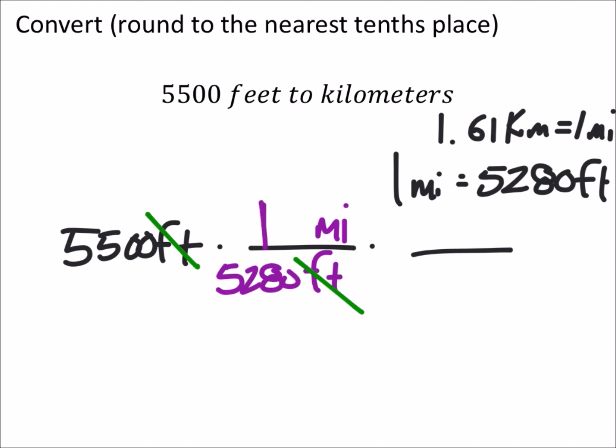But then we want to convert this into kilometers. And that's what we really want out of this. And we have a relationship between kilometers and miles. One mile is the same as 1.61 kilometers. And now, the miles will cancel out each other as well.